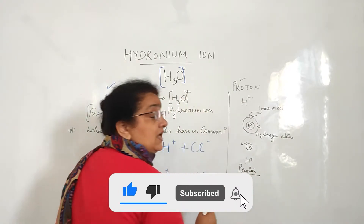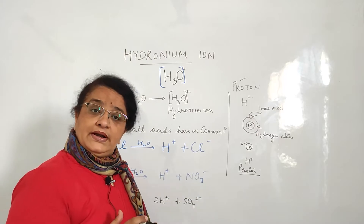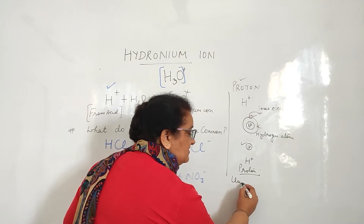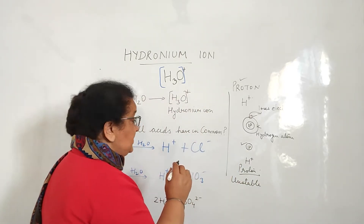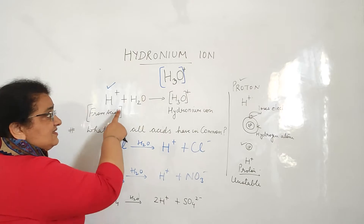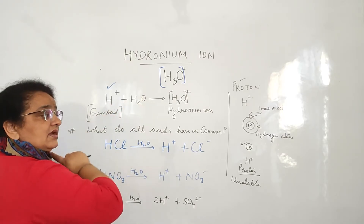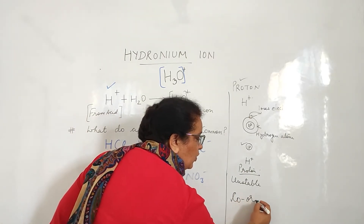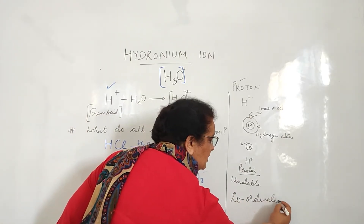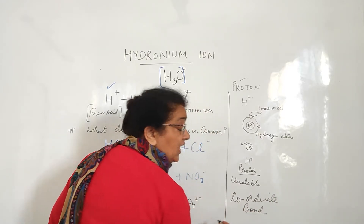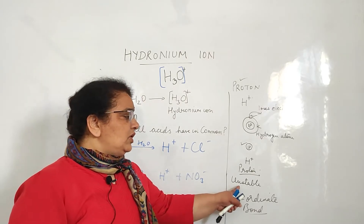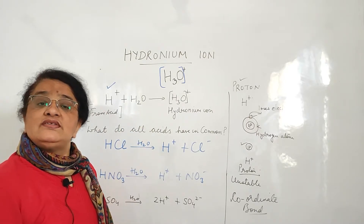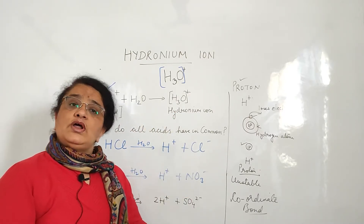This proton cannot exist independently because it is unstable. For its stability, it attaches itself with water. When it attaches with water, it does so with the help of a bond called a coordinate bond. We don't need to go into detail for the CBSE syllabus, but just for knowledge: H-ion attaches with the water molecule via a coordinate bond. So this is what forms the hydronium ion.